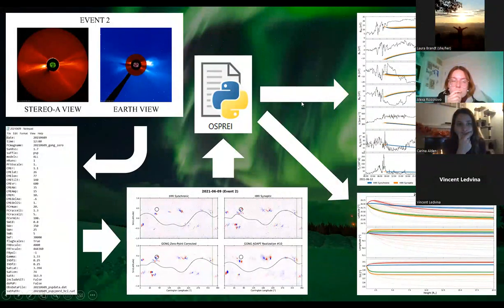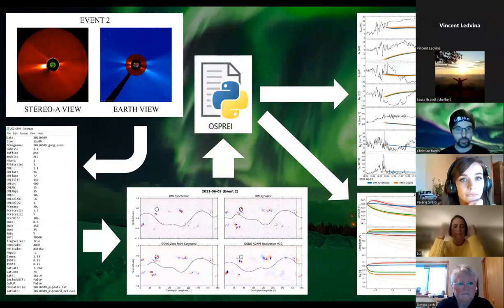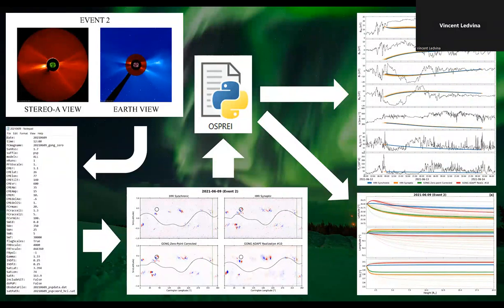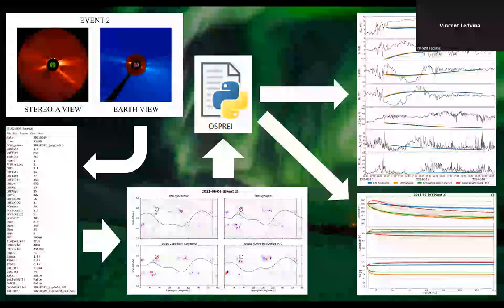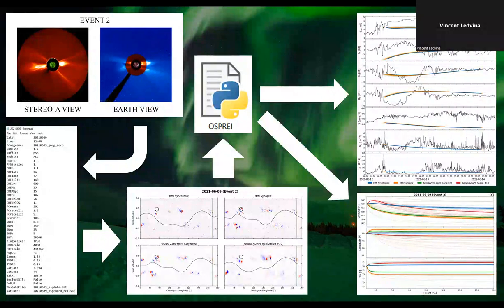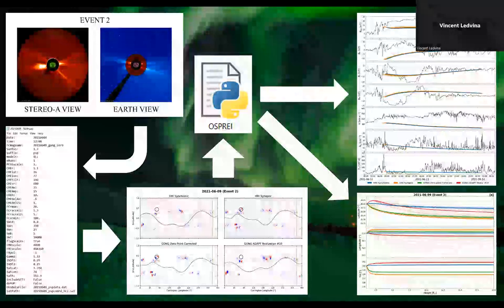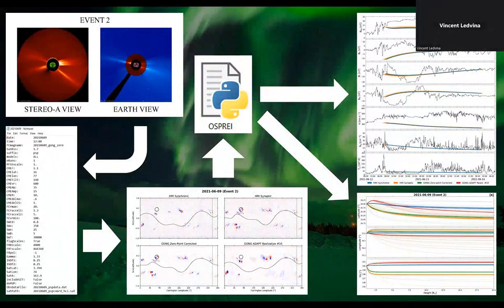This is the workflow we ended up with for this study. We started by identifying events — due to the funding, we had to use Parker Solar Probe, so we looked at Parker Solar Probe data and found ICME shocks. I looked at a movie playing over a certain number of years and found all the CMEs that looked good without bad data. We then looked at Stereo and Earth-facing coronagraphs, wanting four events — a mixture where we could see the CME on the Earth-facing disk, on the backside of the sun, and only in Stereo A's view, because the location of the source region affects how the magnetogram looks.